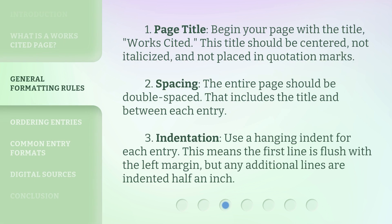1. Page title: Begin your page with the title 'Works Cited.' This title should be centered, not italicized, and not placed in quotation marks. 2. Spacing: The entire page should be double-spaced — that includes the title and between each entry. 3. Indentation: Use a hanging indent for each entry. This means the first line is flush with the left margin, but any additional lines are indented half an inch.